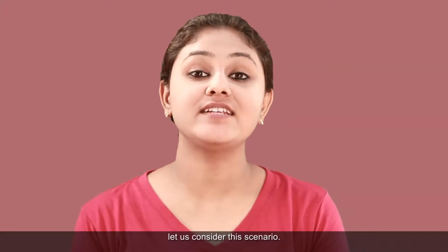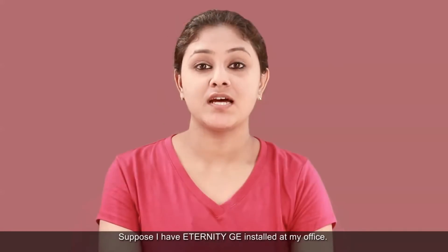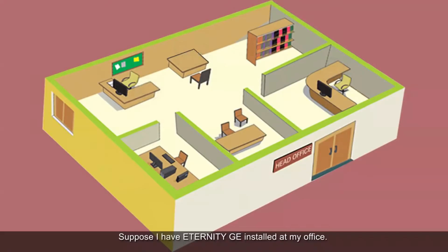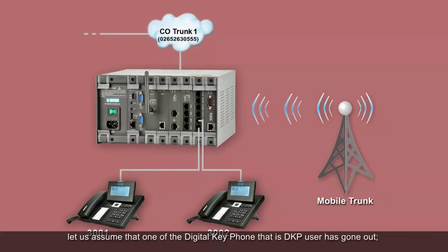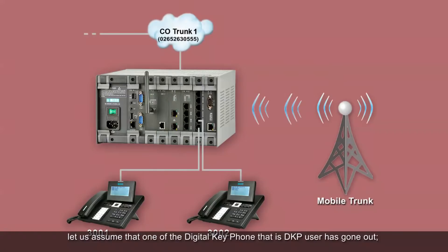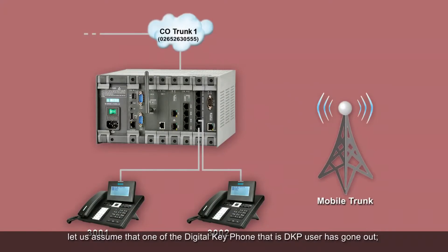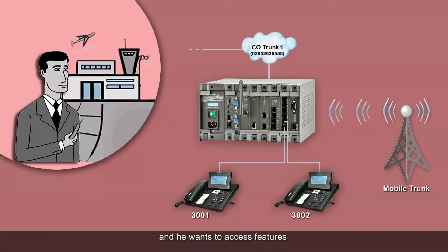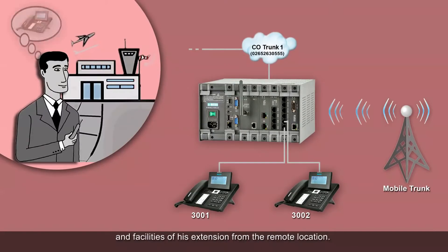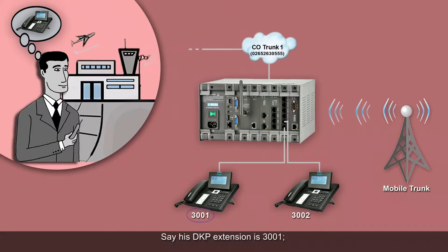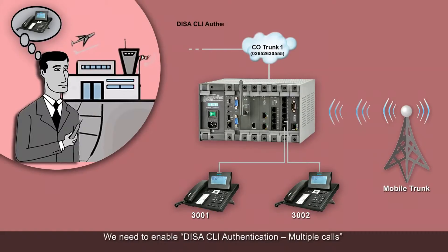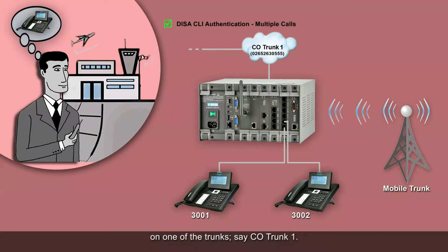To better understand this feature, let us consider a scenario. Suppose I have eternity G installed at my office. One of the digital key phone (DKP) users has gone out and wants to access features and facilities of his extension from a remote location. His DKP extension is 3001 and its port number is 1. We need to enable DISA CLI authentication multiple calls on one of the trunks, say CO trunk 1.